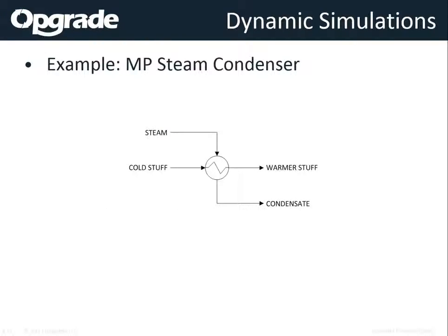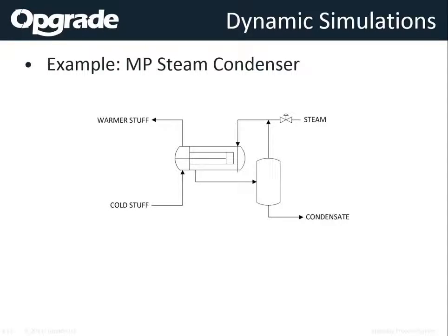So to our example: let's say we have a steam condenser with steam coming in, cold stuff coming in, warmer stuff going out, and condensate coming out — this is what we would see on a PFD. Intuitively we think that if we reduce the flow rate of our cold fluid, all we have to do is reduce the flow rate of our steam and we achieve the same thermal balance, with the same outlet temperature. That's a very intuitive thing to think. The issue is we don't quite have that. Usually your process fluid goes through the tubes and your steam condenses on the outside in the shell. That condensate goes into a condensate drum and there's a vent back to that steam line.